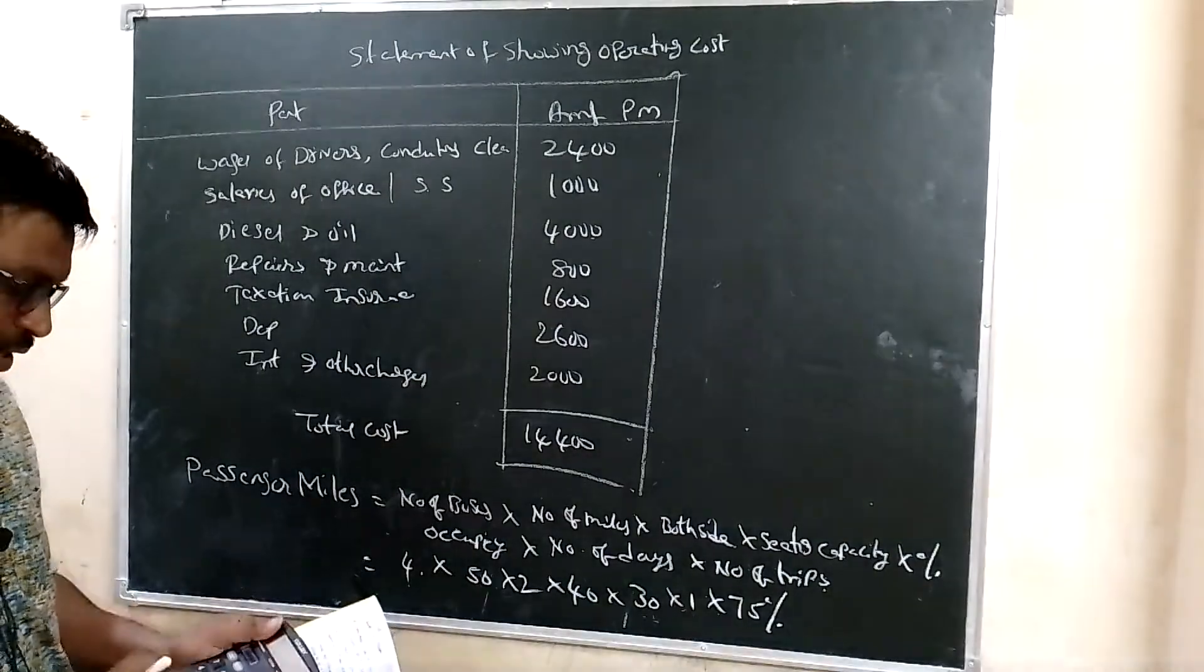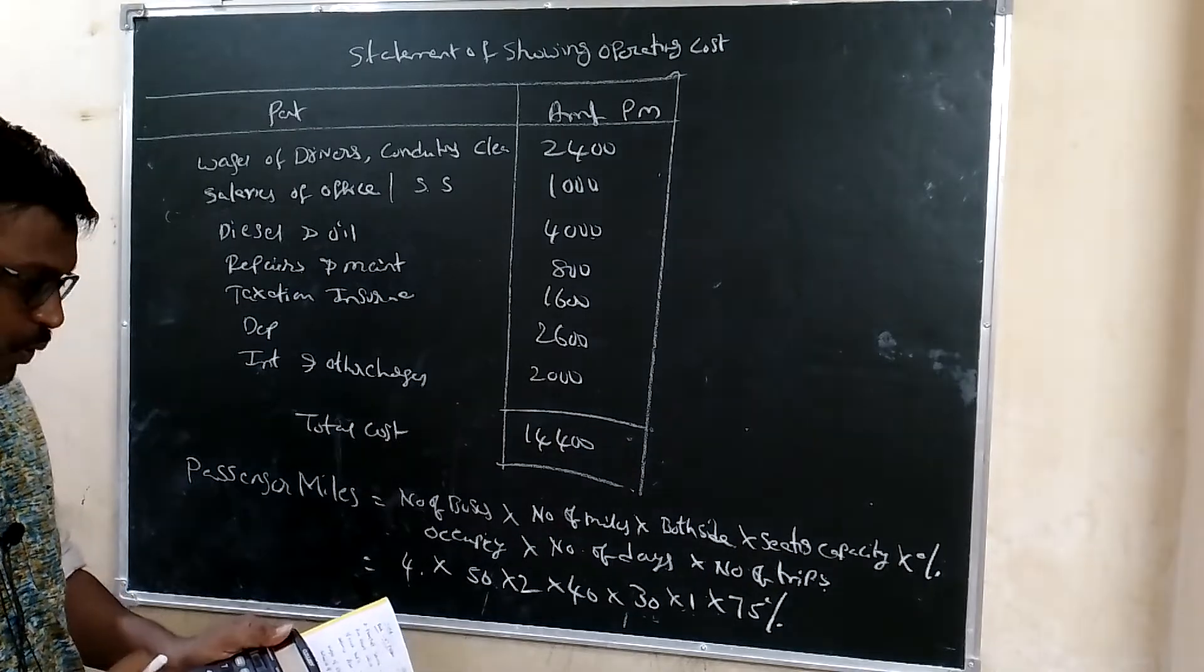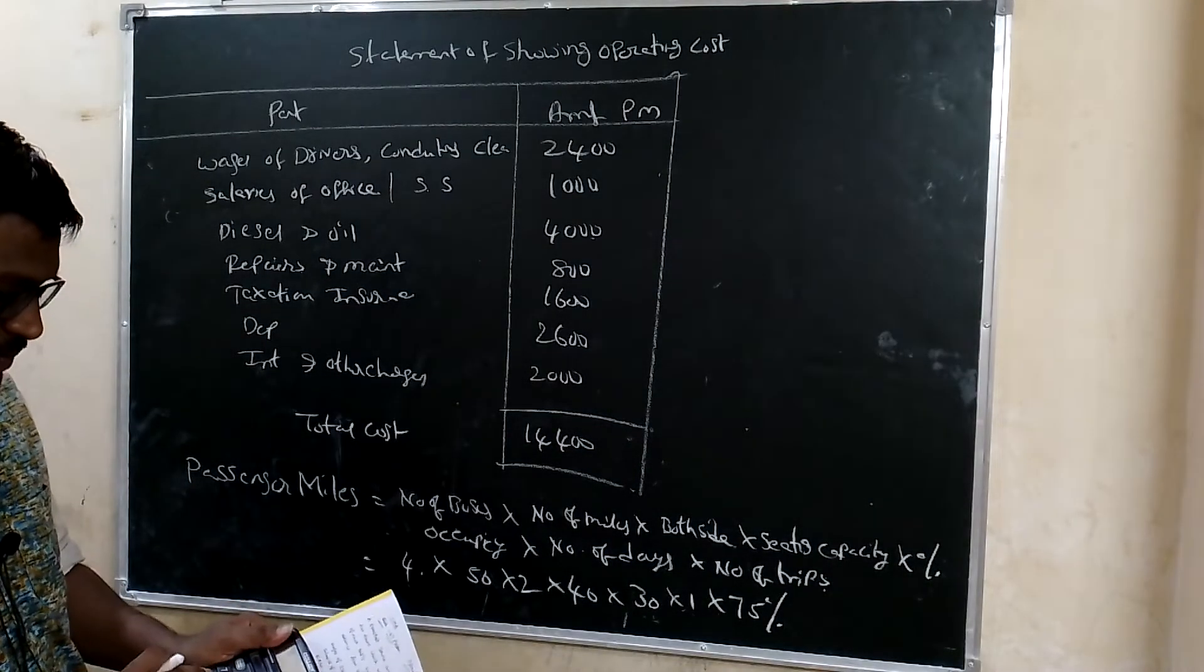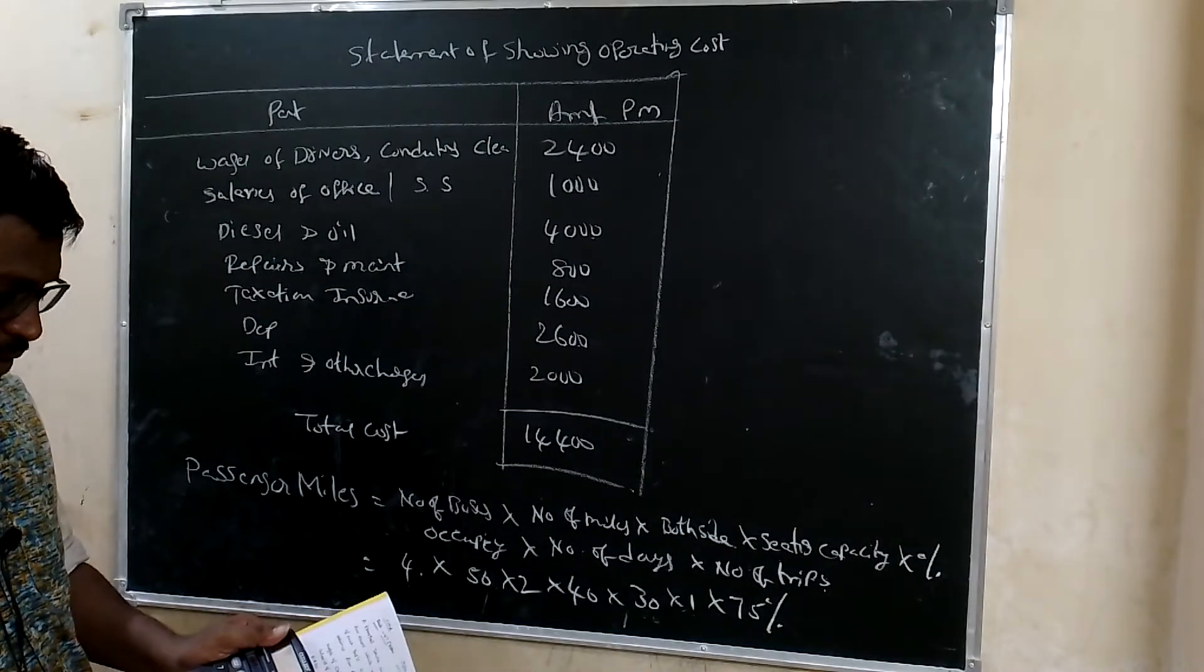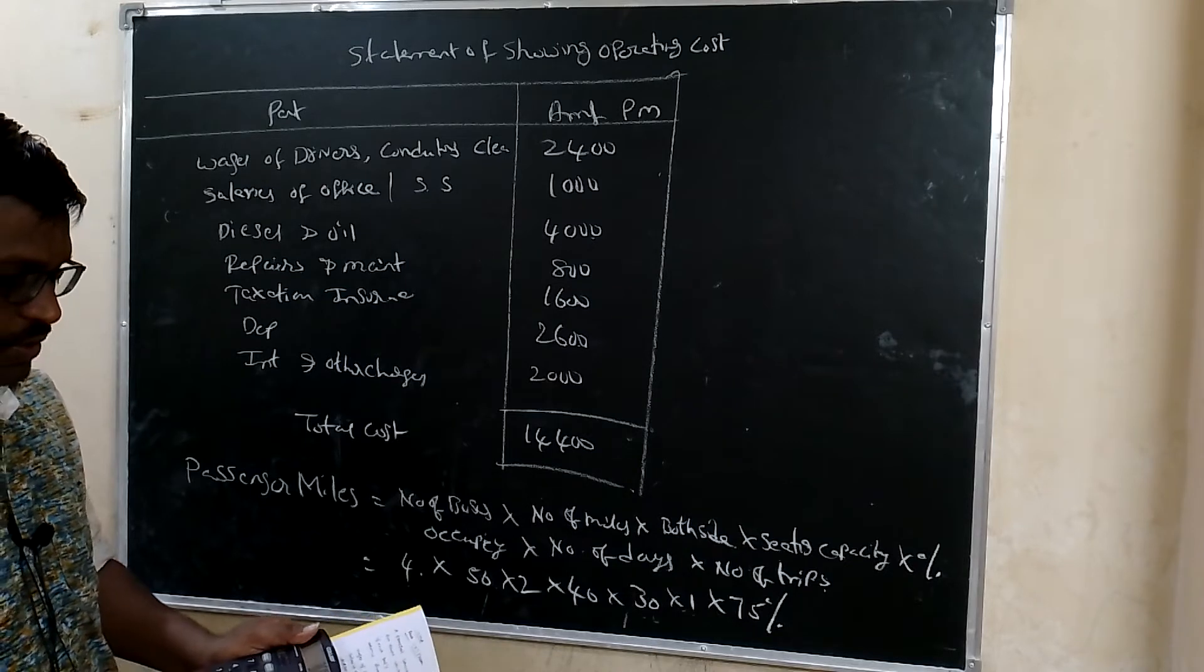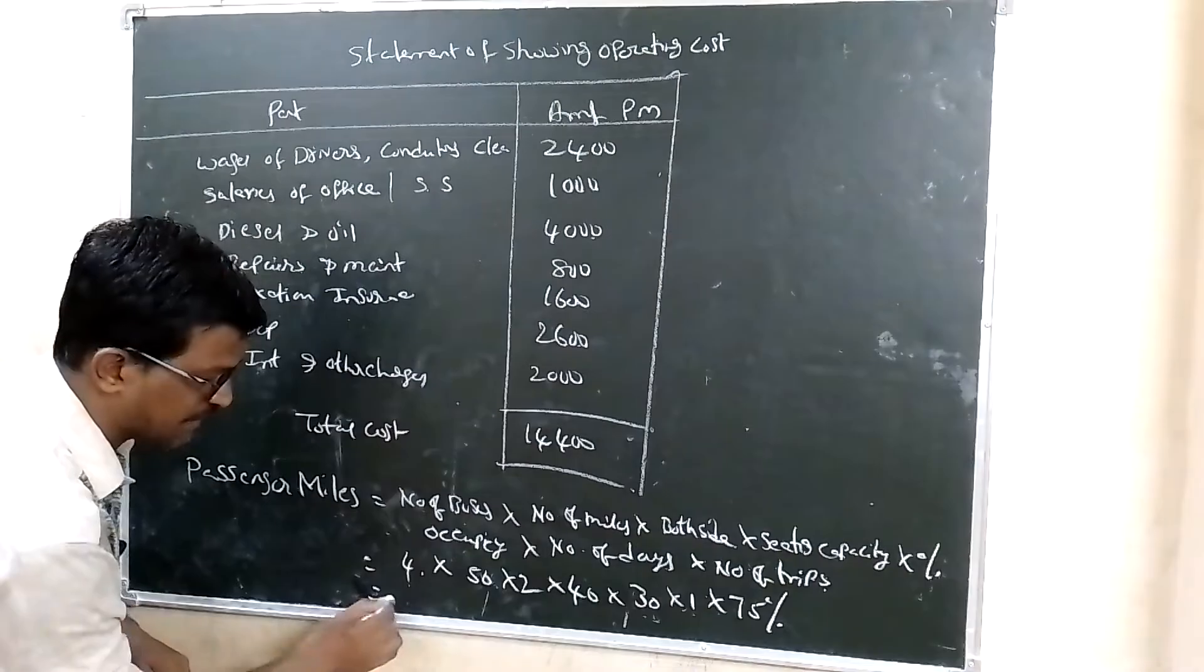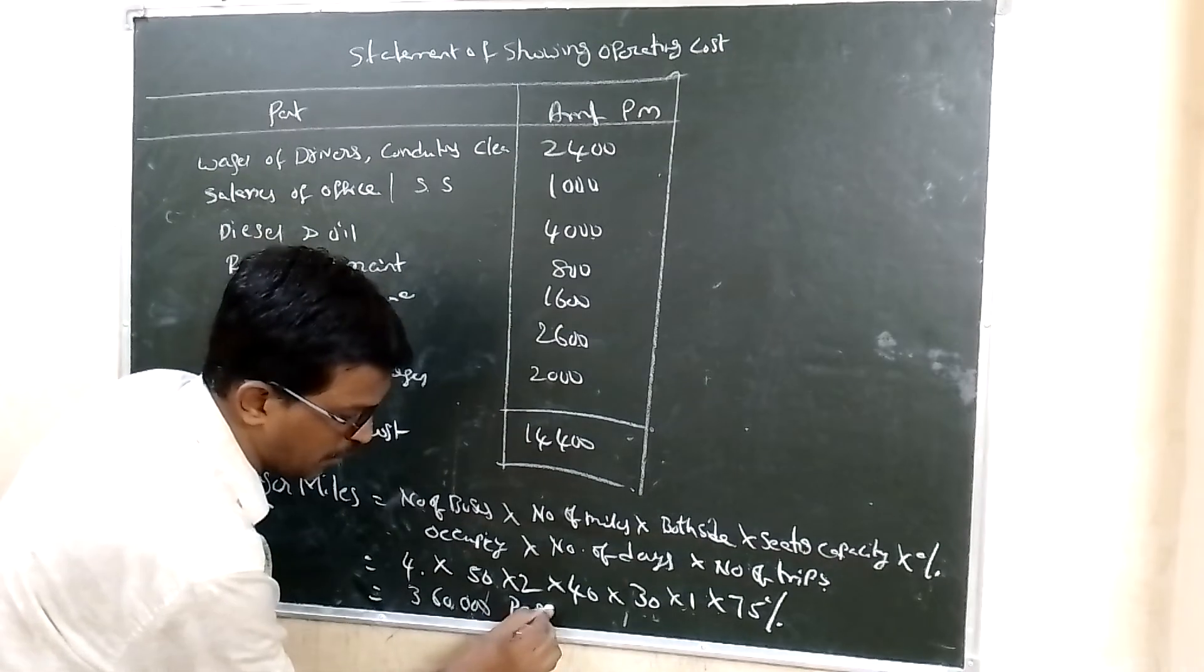So 4 buses into 50 miles one side into 2, into 40 passengers, into 30 days, into one trip, into 75 percent capacity. That gives us 360,000 passenger kilometers.